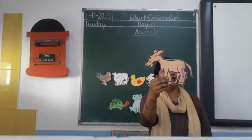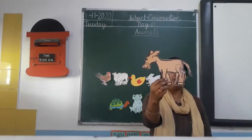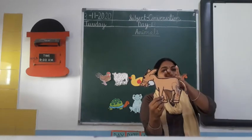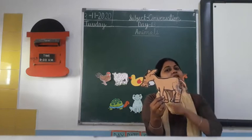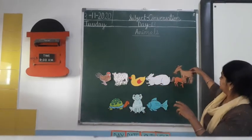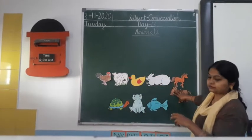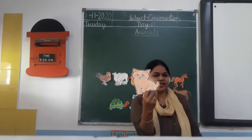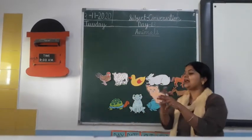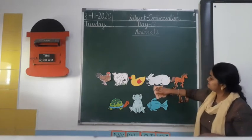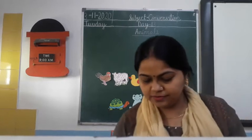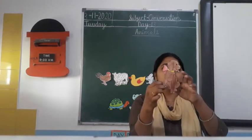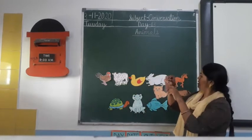What is this? This is a donkey. The donkey is used to carry a load on its back. What is this? Cat. What is the sound of a cat? Meow. Cat is also a farm animal. And what is this? This is a dog. Dog guards our house.